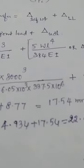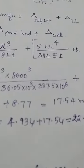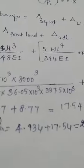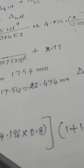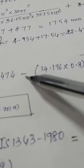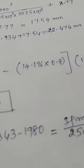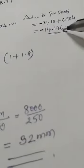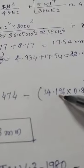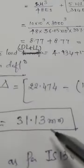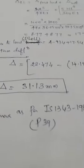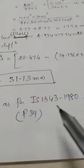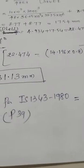Applying the Linz formula: dead load deflection 4.934 plus live load deflection — total downward is 22.474 mm — minus delta due to prestress (Wc and M combined = 14.196 mm upward, negative already included). After simplification, the long-term deflection is 31.13 mm.